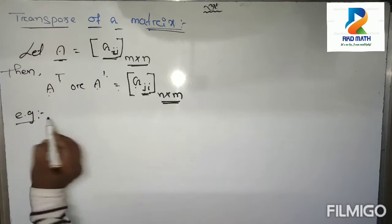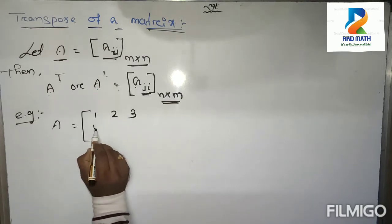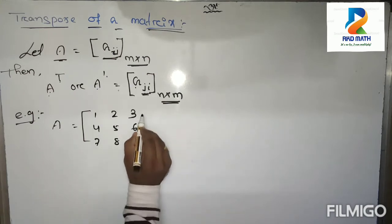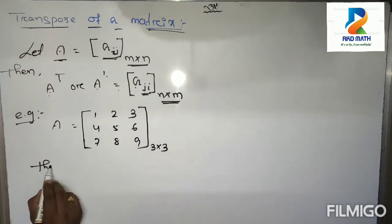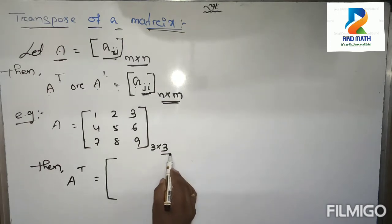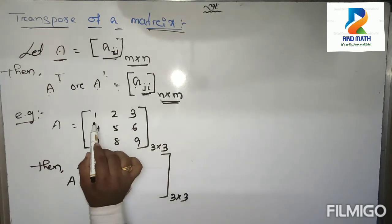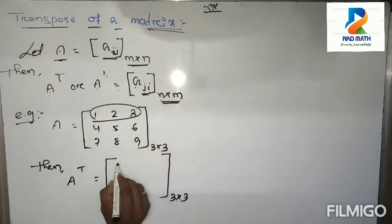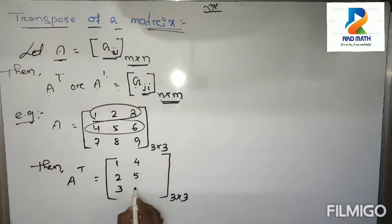Let's take an example. Suppose A is a matrix with entries 1, 2, 3, 4, 5, 6, 7, 8, 9 — a matrix of order 3 by 3. Then A transpose is also of order 3 by 3 because m equals n. The first row becomes the first column: 1, 2, 3. The second row becomes the second column: 4, 5, 6.